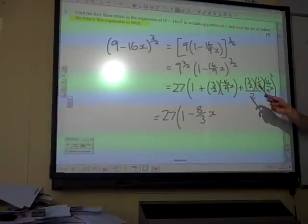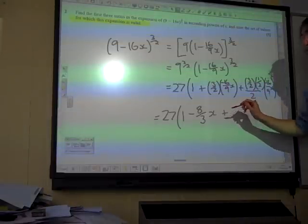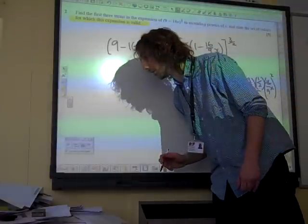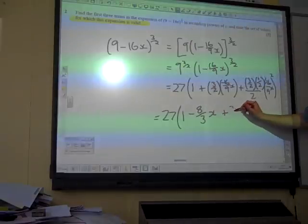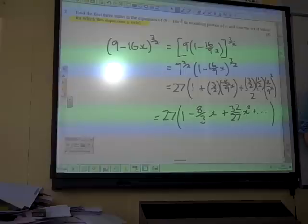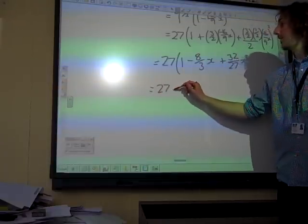The second mark is for the method in working this bit out. The third mark is for actually getting the right thing there, which would be 32 over 27 x squared, and then the expansion would go on. And the fourth mark is for 27.